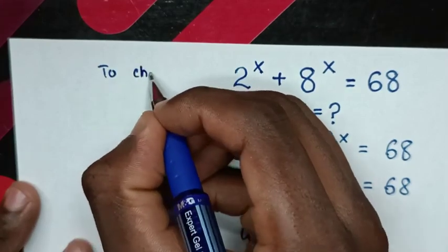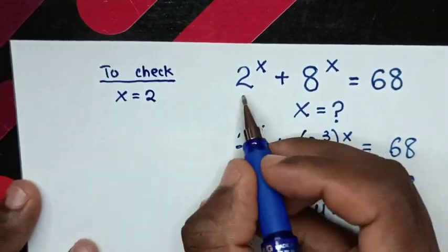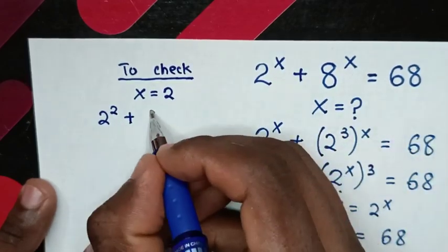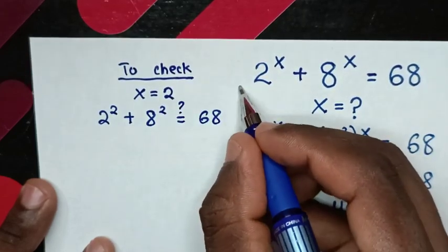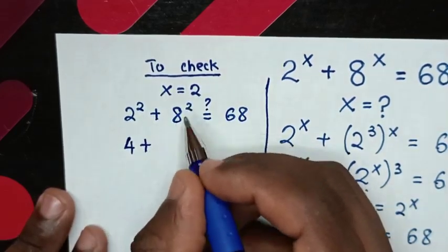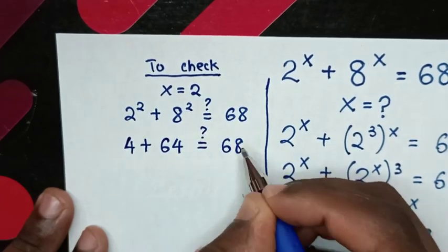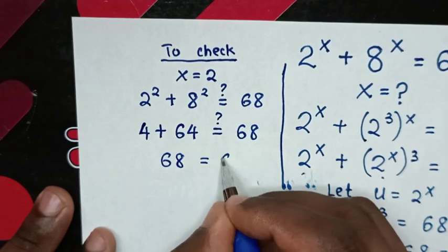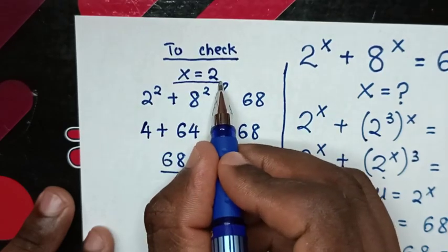To check: from the value x is equal to 2, we substitute 2 into this equation, so it will be 2 power of 2 plus 8 power of 2 — is it equal to 68? Then 2 power of 2 is 4, plus 8 power of 2 is 64 — is it equal to 68? Then 4 plus 64 is 68, which is equal to 68. So left side and right side are equal, therefore it's true that the value of x is equal to 2.